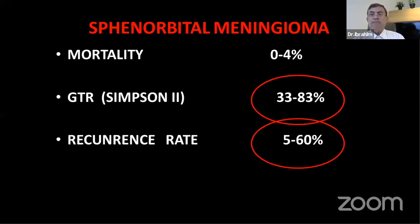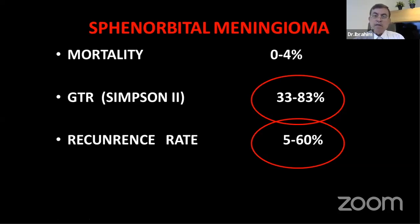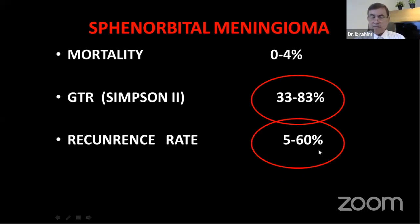What about general published outcomes? Mortality ranges from 0 to 4%. Gross total resection is described as Simpson Grade II — you cannot speak about Simpson Grade I in the orbit, just as you don't in petroclival meningiomas. Gross total resection rates range from 33 to 83% in the general literature, and the recurrence rate remains high.